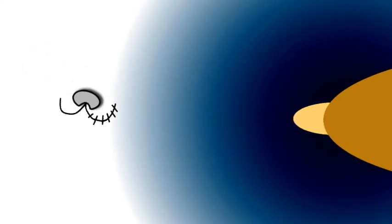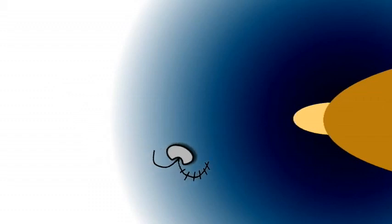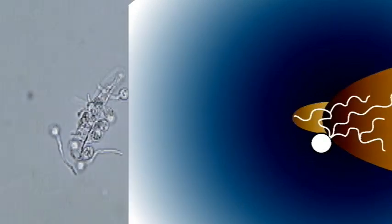When zoospores are exposed to chemical signals released from germinating seeds, represented here by the blue gradient, they use their flagella to swim toward the seed. This behavior is called chemotaxis, or directional swimming using a chemical gradient. When they reach the germinating seed, they shed their flagella and attach to the seed. The encysted zoospores germinate and cause infection.